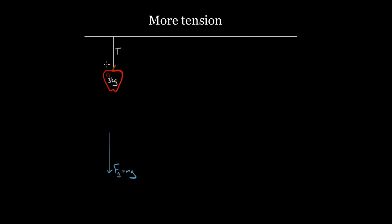Then we've got a tension force, and tension does not push — you can't push with a rope, you can only pull with a rope. So this tension force points upward; I'll call it T. That's always the first step: you draw your force diagram. Now you use Newton's second law for either the horizontal direction, the vertical direction, or both if you have to. It's pretty obvious here — we'll pick the vertical direction because there are no forces in the horizontal direction.